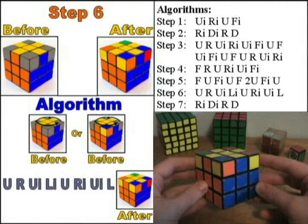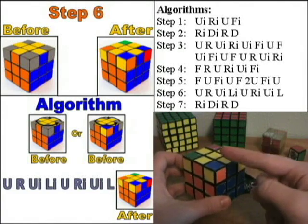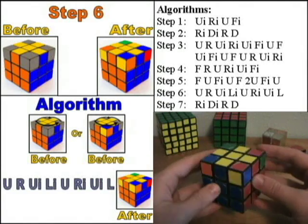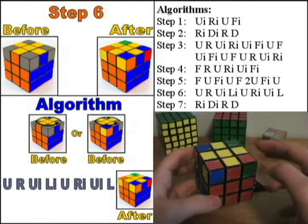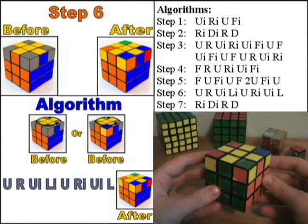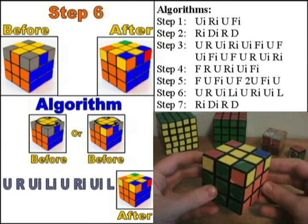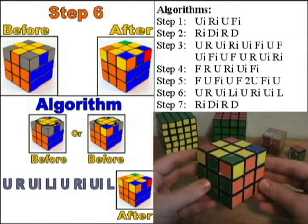The objective for step six is very similar to the goal for step two. You'll need to put each corner into the right spot, but we will worry about orienting them later. The algorithm used in this step is U R U I L I U R I U I L.